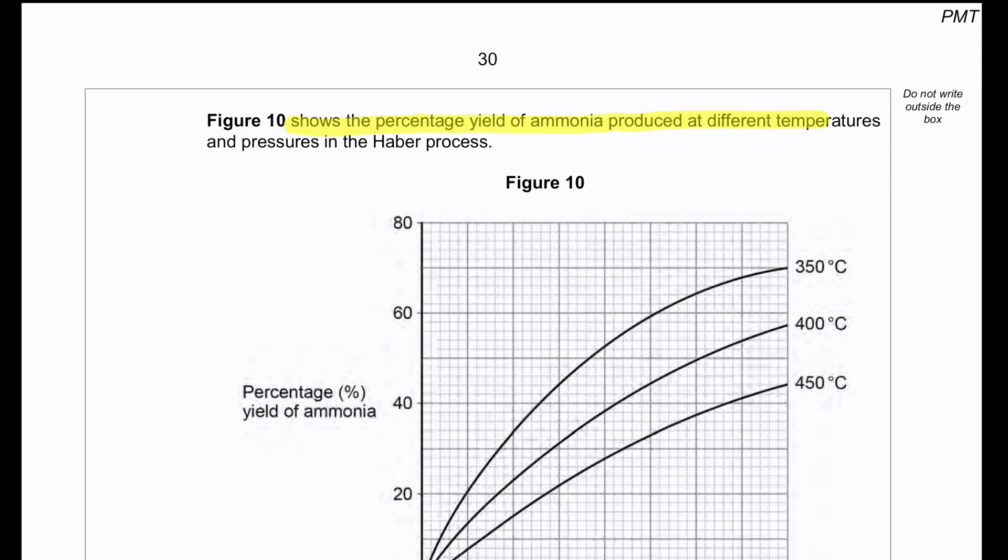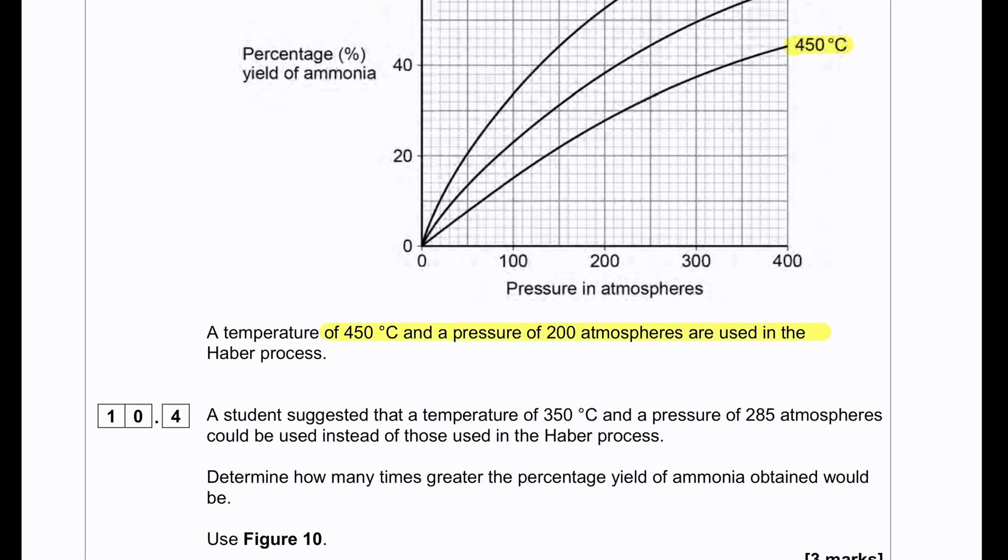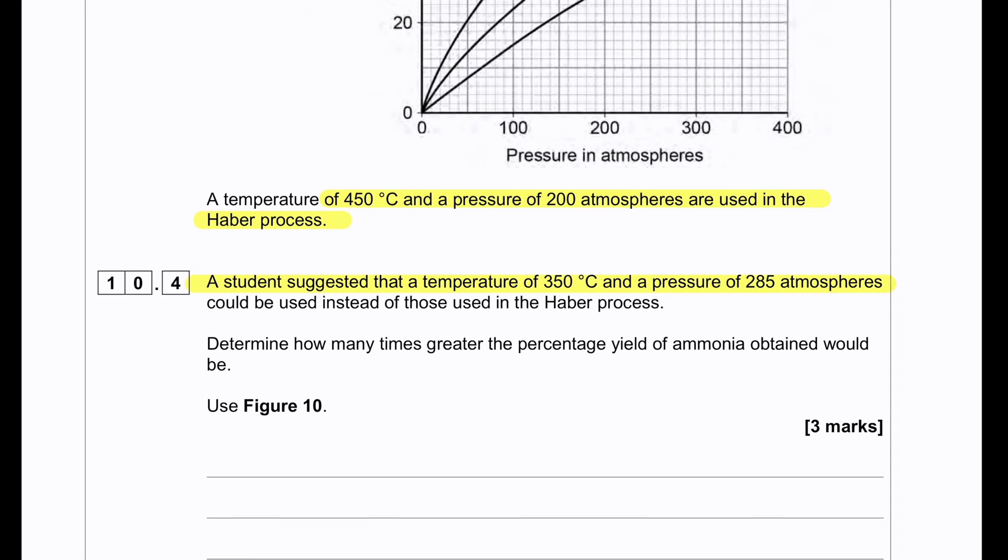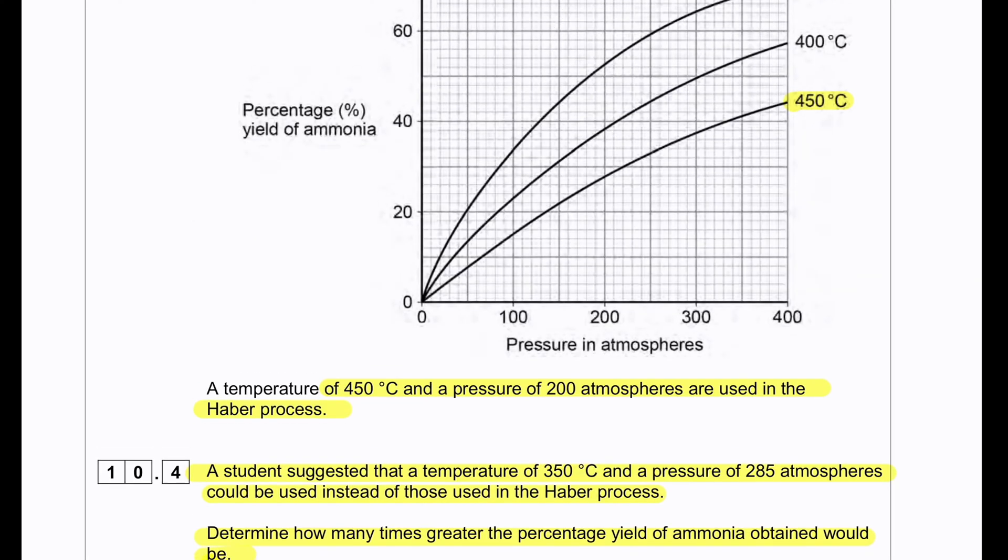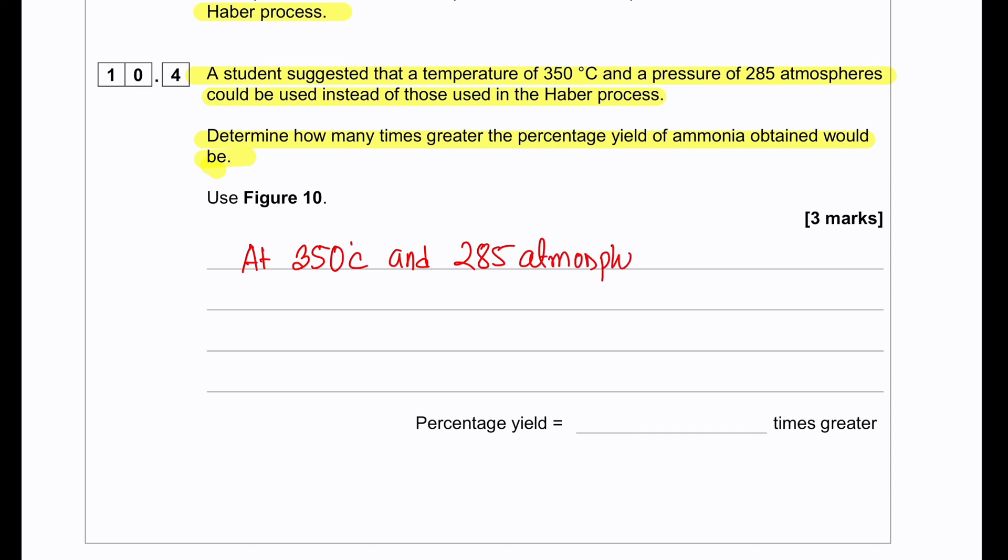Figure 10 shows the percentage yield of ammonia produced at different temperatures and pressures in the Haber process. We can see 450°C up to 350°C is used. A temperature of 450°C and 200 atmospheres are used in the Haber process. A student suggested that a temperature of 350°C and a pressure of 285 atmospheres could be used instead. Determine how many times greater the percentage yield of ammonia obtained would be. We'll have to extrapolate from 285 and touch the line of 350, then move to the left. At 350°C and 285 atmospheric pressure we have 63% yield, whereas at 450°C and 200 atmospheres we have 28% yield. So 63 divided by 28 equals 2.25 times greater yield will be produced.